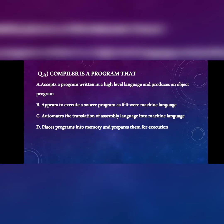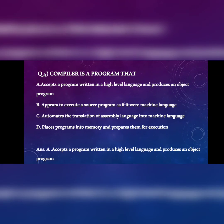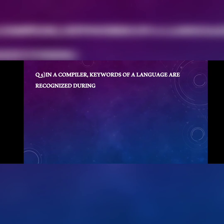Question 4: a compiler is a program that A) accepts a program written in high-level language and produces an object program, B) appears to execute the source program as if it were machine language, C) automates translation of assembly language into machine language, D) places the program into memory and prepares it for execution. High-level languages like Java, C++, C#, Python produce the object program, so the answer is A.